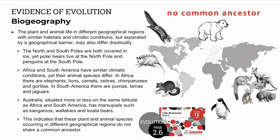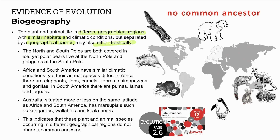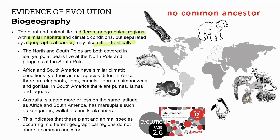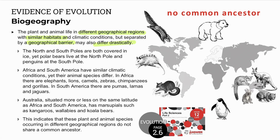Plant and animal life in different geographical regions with similar habitats, but separated by geographical barriers, may also be very different, indicating no common ancestor. For example, the polar bears in the North Pole and the penguins in the South Pole. Africa and South America have very similar climates yet very different species, and marsupial mammals in Australia versus placental mammals in the Americas are examples of convergent evolution — where organisms become more similar over time but descend from different ancestors.